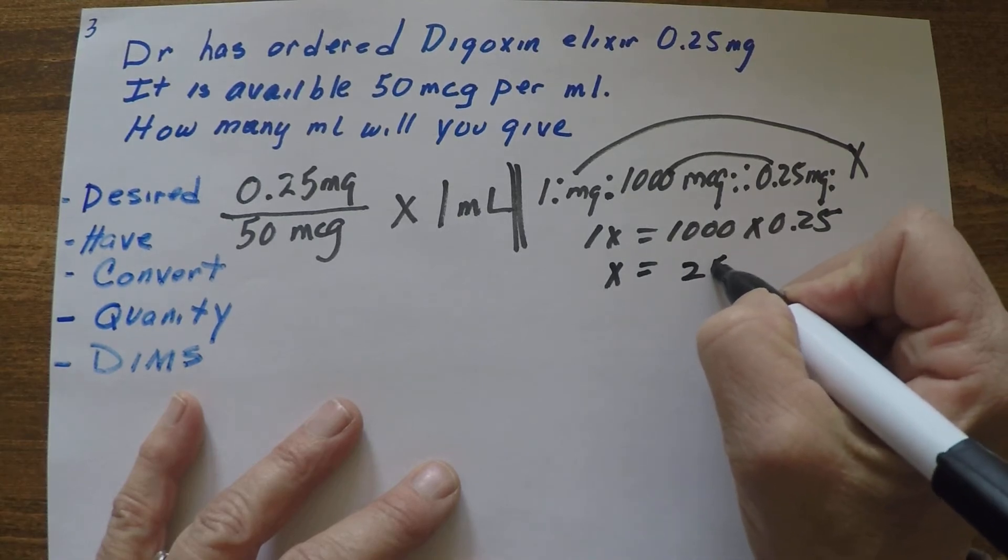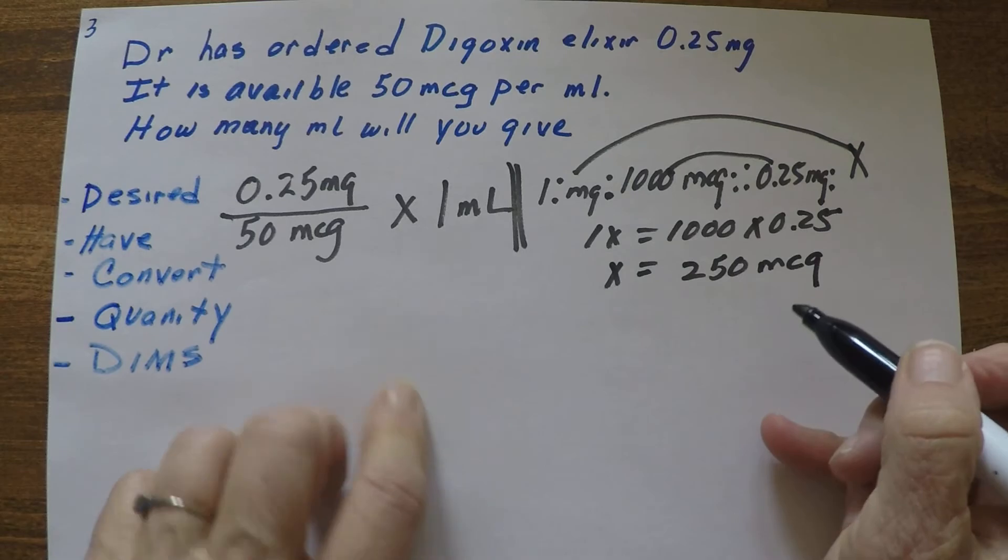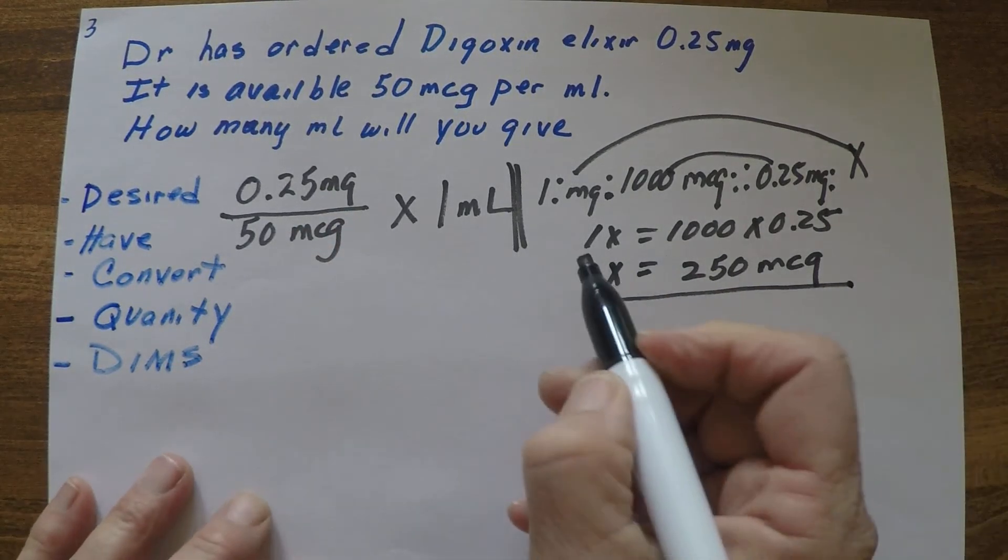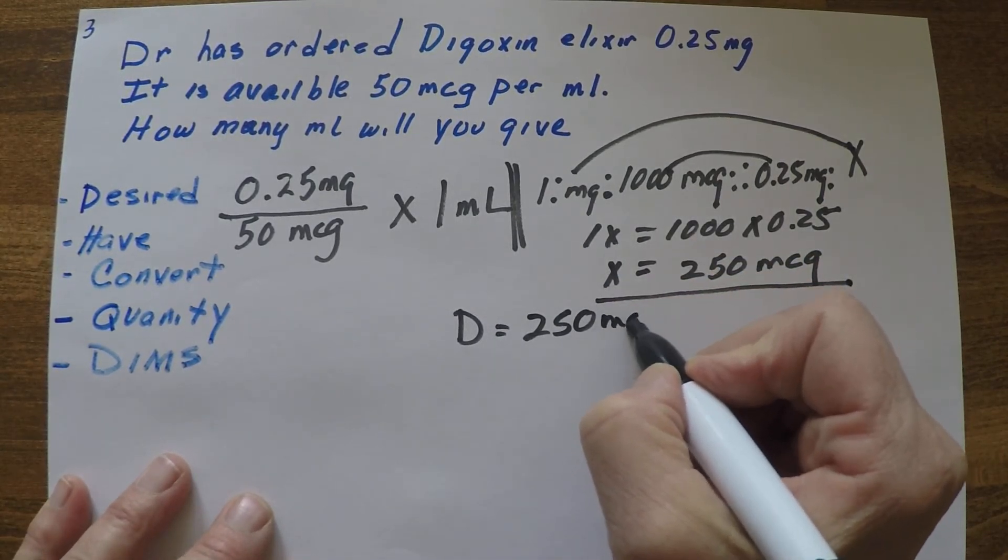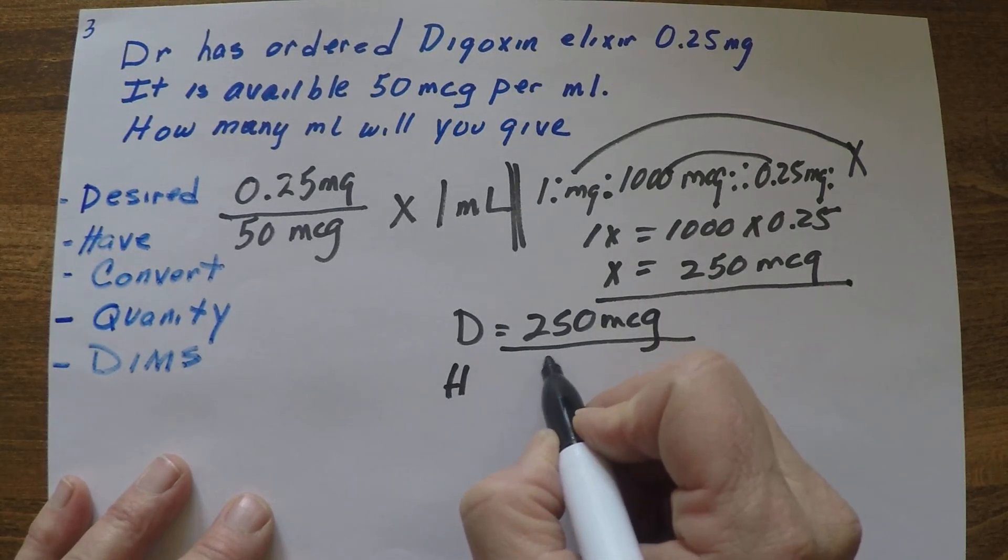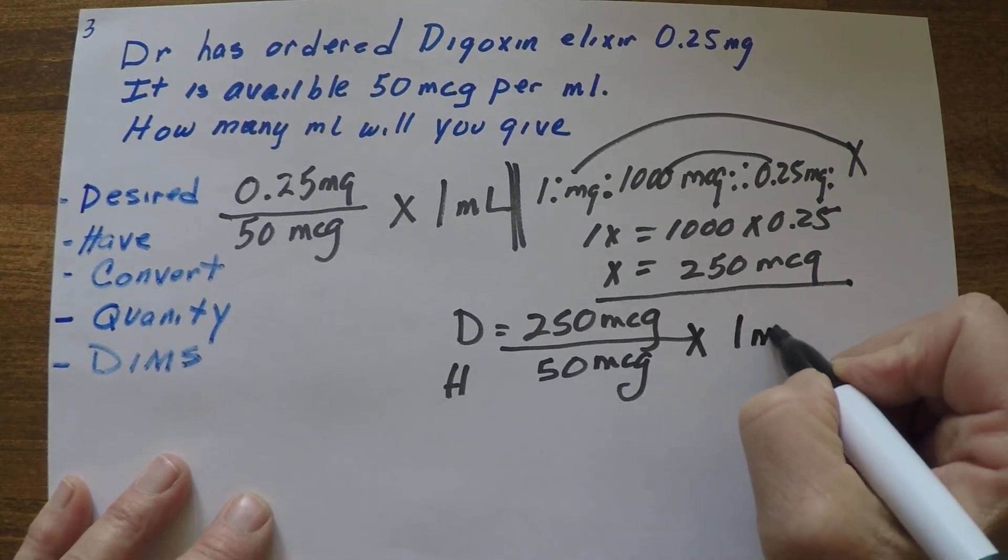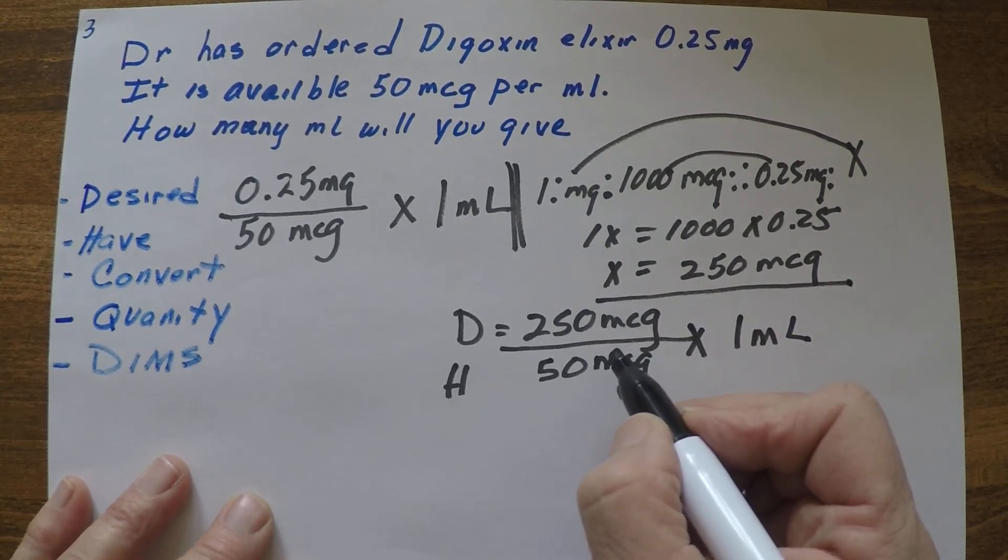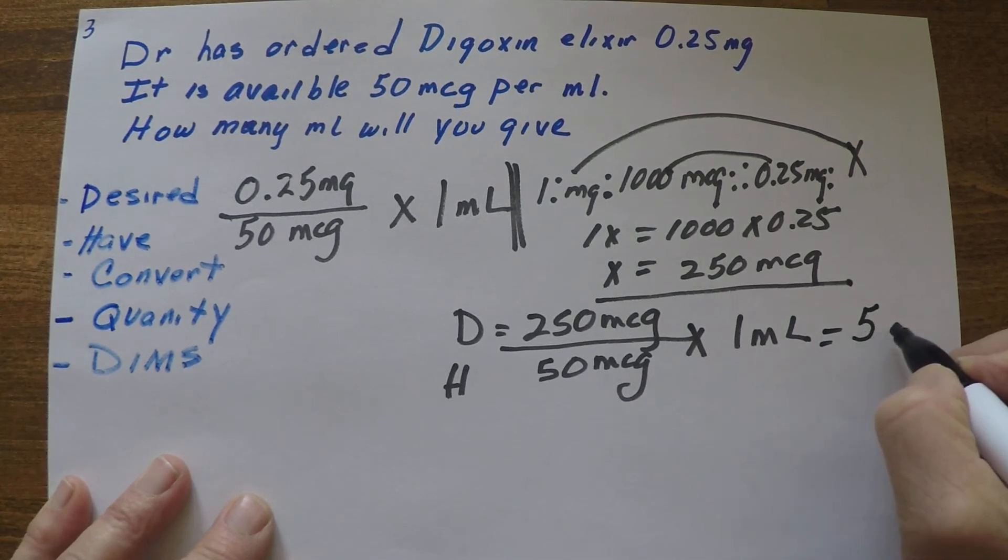So our desired is 250 mics. So let's plug our numbers in. So desired is 250 mics, we have 50 micrograms per 1 ml, and we do the math. 250 divided by 50, we're going to come up with 5 ml.